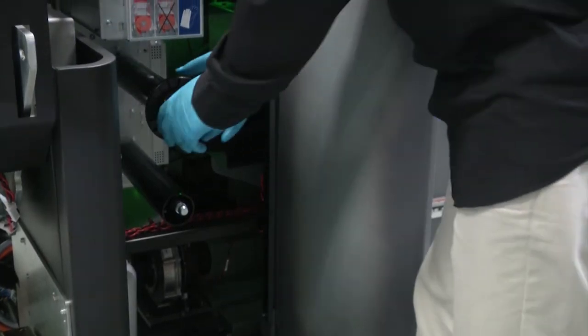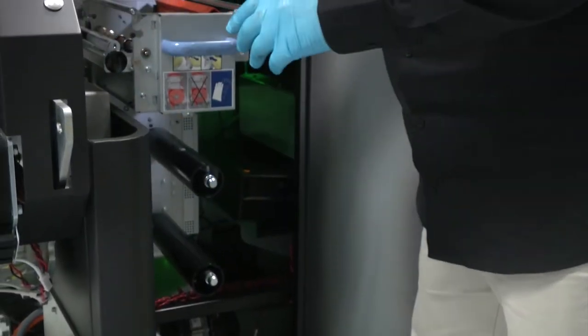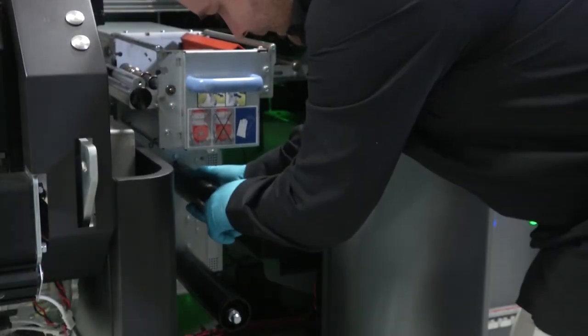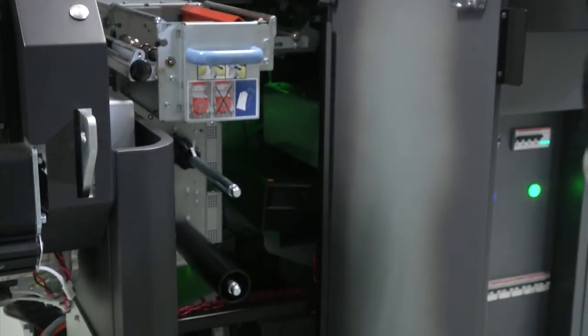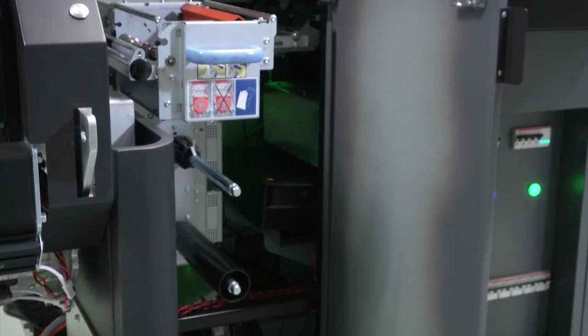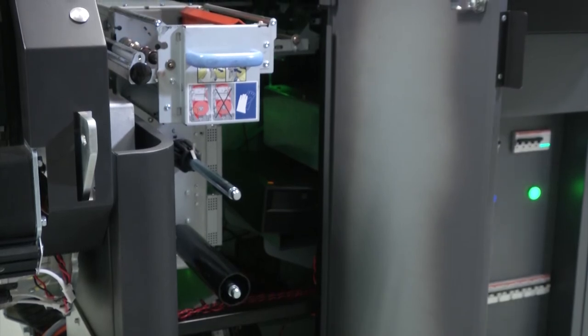Remove the empty core and keep it to use it as a take up core. Insert the end cap until it clicks into place. The empty core must be aligned against the end cap.